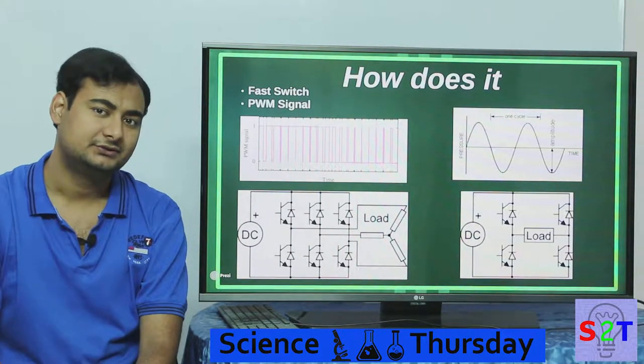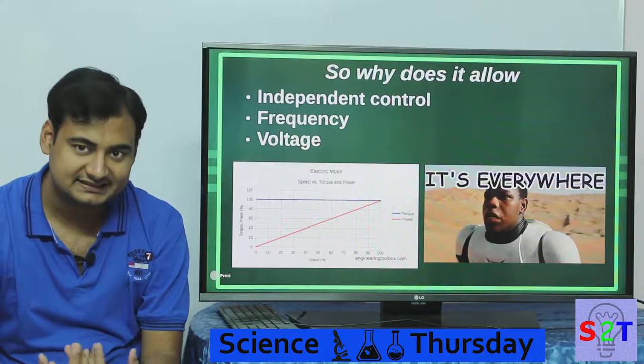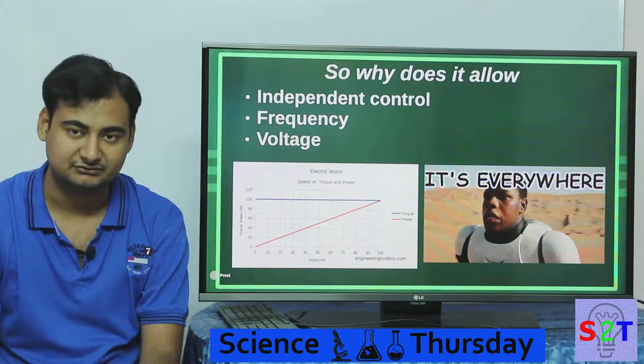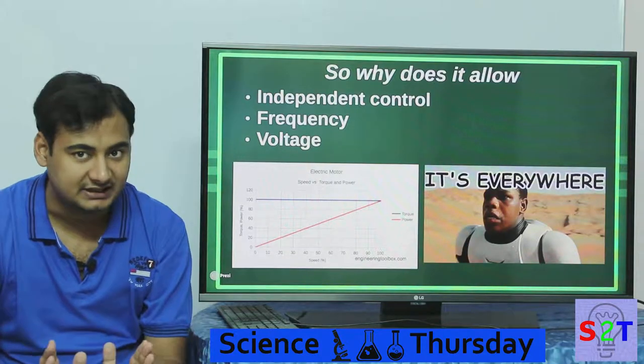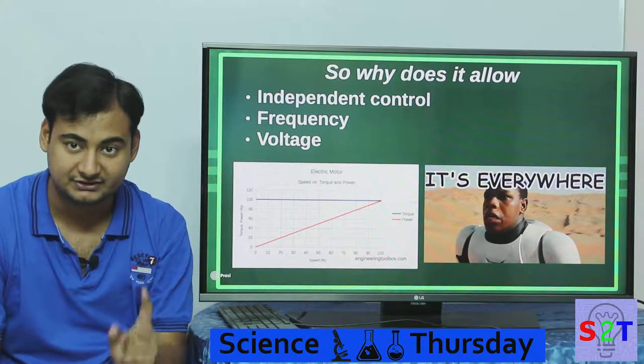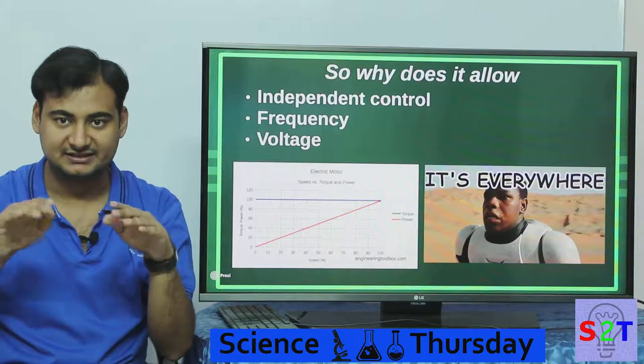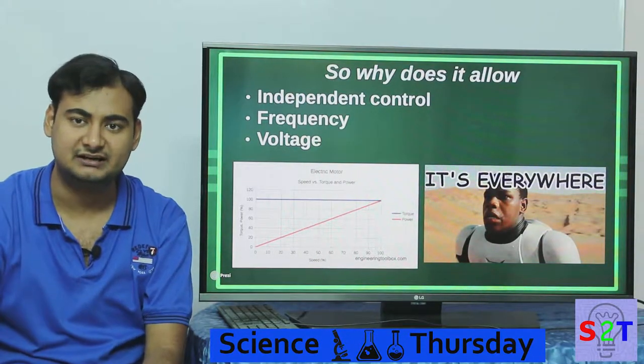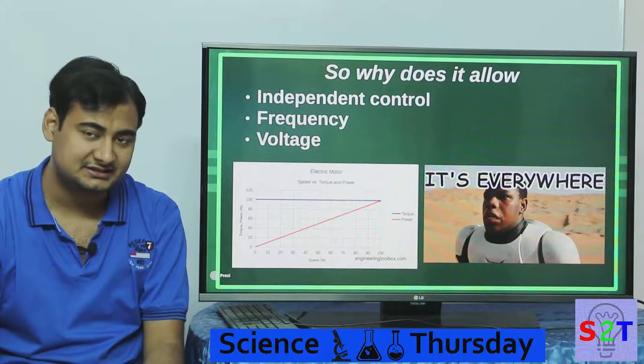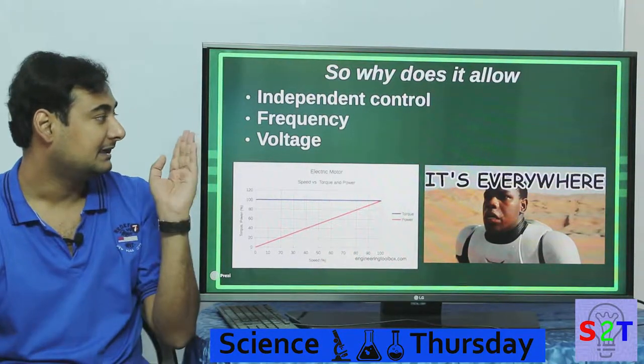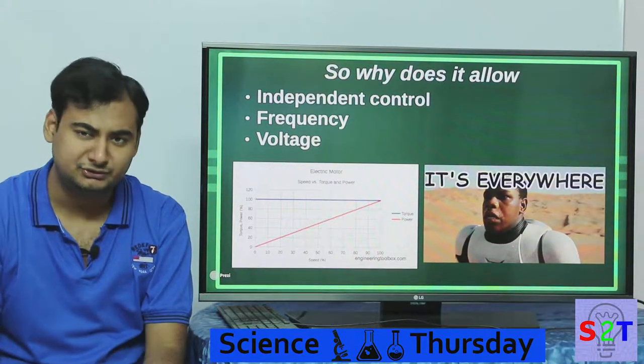So now we know what an inverter is, now we know how it works. So what does it allow? You made an inverter, okay cool, everything is fine, we get DC to AC. So what is it allowing us? Well, it's allowing us what's called independent control. So there are two main factors to AC electricity. First is the amount of voltage it has - the height of the wave, how high it's going. Like in our case, we have 220 volts, so that's the voltage. And you might say amperage, but amperage is specific to the system, so that's why we're not counting that. And then it has frequency - how often is it going on and off.